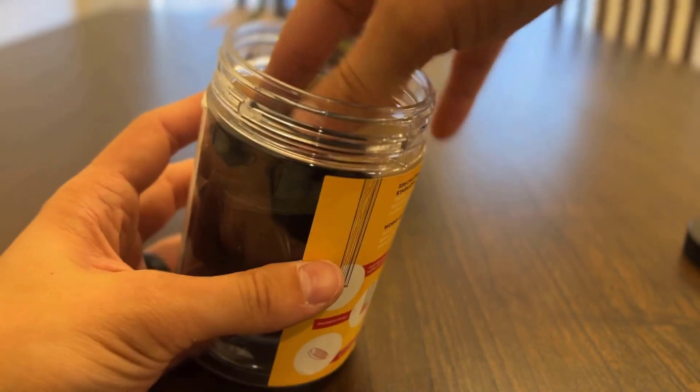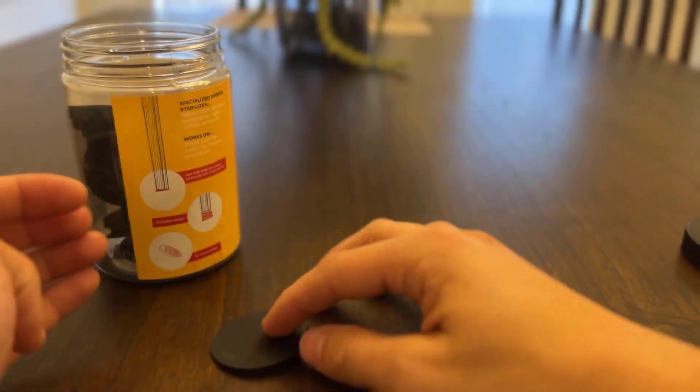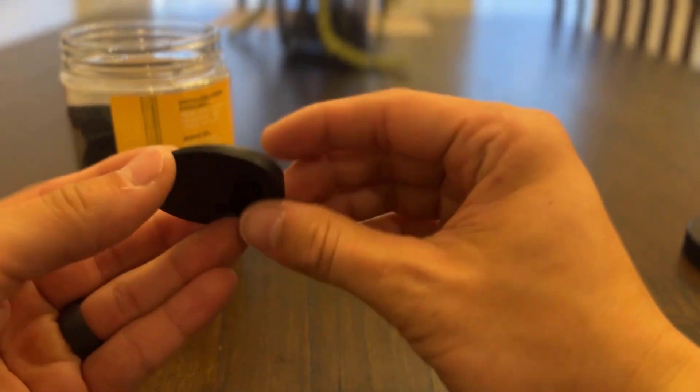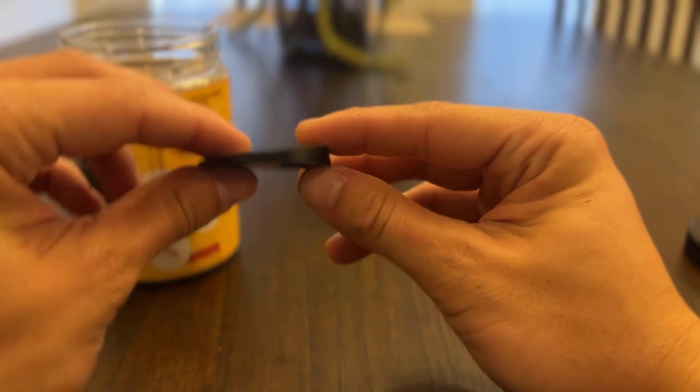But to give you an idea, this is what they kind of look like. So this is the part that would sit on the floor, and this is the part that your leg would sit on. As you can see, it's got a little bit of an angle on there.